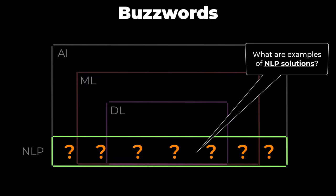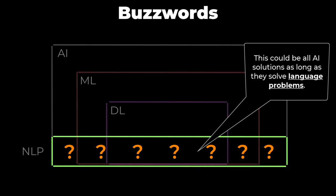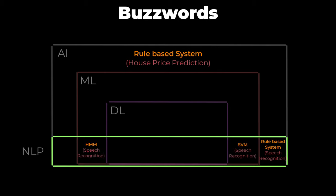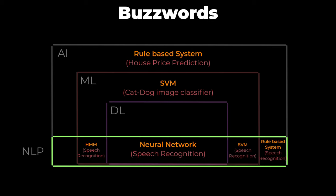What are examples of NLP solutions? It could be the same as all the AI solutions as long as they solve language problems. A rule-based system that solves speech recognition falls under NLP, but a rule-based system that predicts the price of a house falls under AI but not NLP. Hidden Markov models and support vector machines designed to solve speech recognition fall under both NLP and machine learning. Support vector machines designed to classify images as a cat or a dog can fall under machine learning but not NLP. Neural networks that solve speech recognition fall under NLP and deep learning, but neural networks that predict the price of a house fall under deep learning but not NLP.